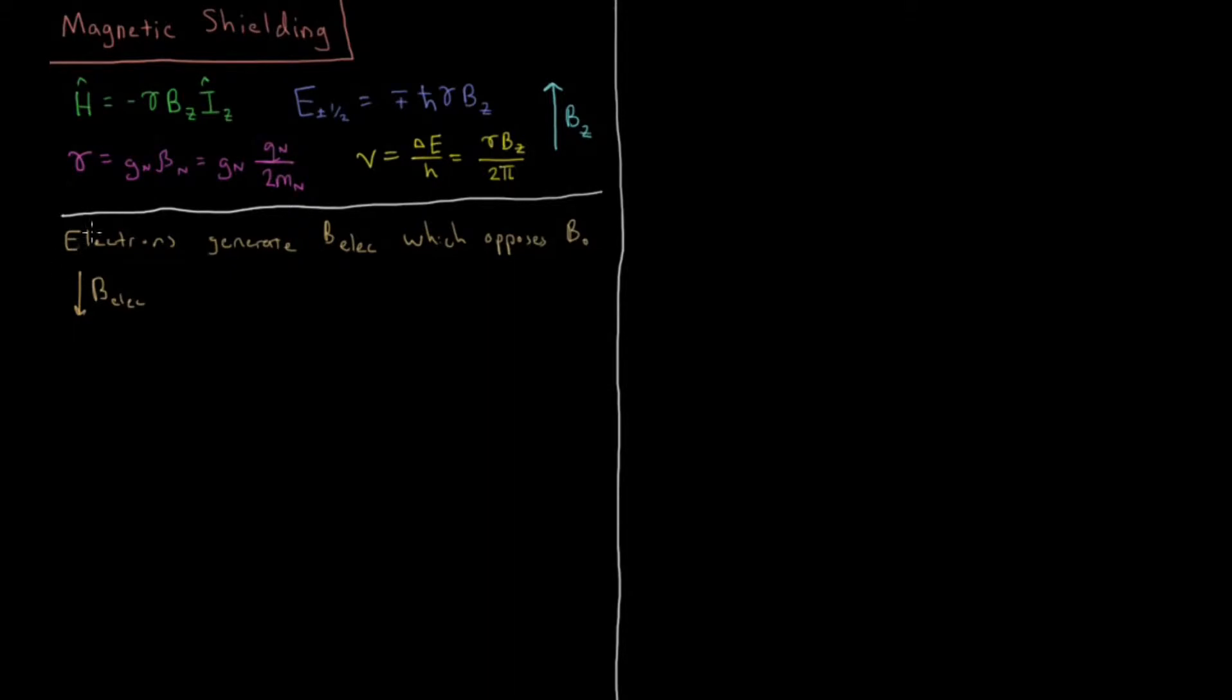In this case, our magnetic field generated by the electrons is going to be minus sigma times B-naught which is our magnetic field with no shielding. And this quantity sigma here is going to be called the shielding constant.